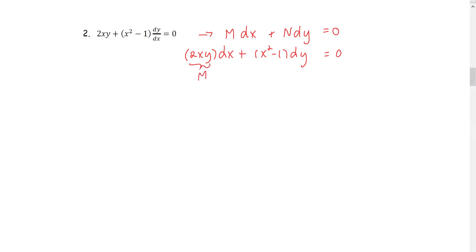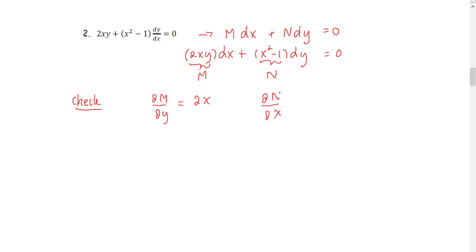Therefore, M is 2xy and N is x squared minus 1. We are going to check whether this equation is exact or not by finding the partial derivative of M with respect to y, which gives 2x, and the partial derivative of N with respect to x, which also gives 2x. They are equal to each other. Therefore, this differential equation is exact.